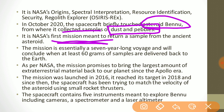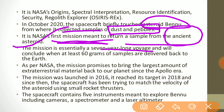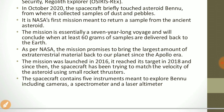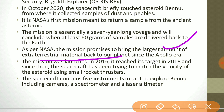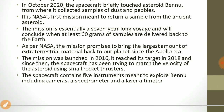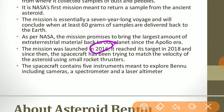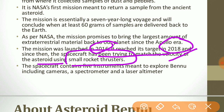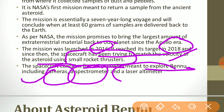OSIRIS-REx is NASA's first mission meant to return a sample from an ancient asteroid. The mission is essentially a 7-year-long voyage that will conclude when at least 60 grams of samples are delivered back to Earth. NASA says the mission promises to bring the largest amount of extraterrestrial material back to our planet since the Apollo era. The mission was launched in 2016 and reached its target in 2018. The spacecraft contains 5 instruments to explore Bennu, including cameras, spectrometers, and a laser altimeter.